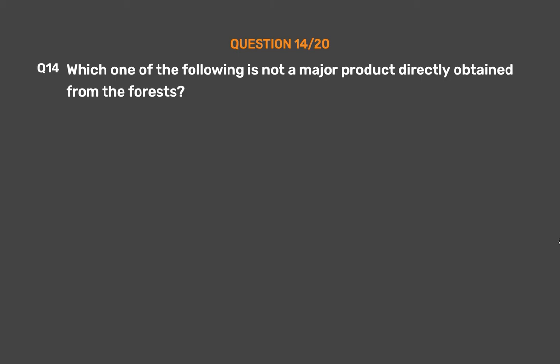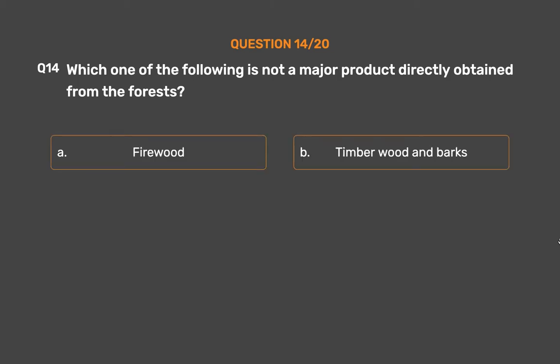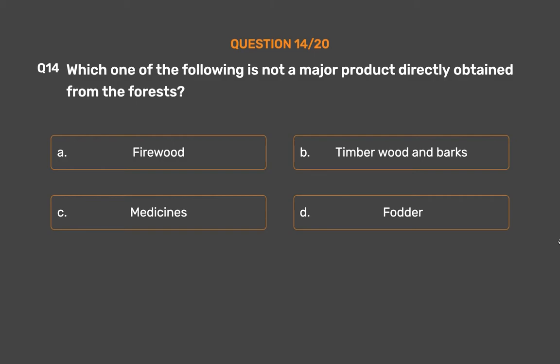Question number 14. Which one of the following is not a major product directly obtained from forests? Option A: Firewood. Option B: Timberwood and barks. Option C: Medicines. Option D: Fodder.